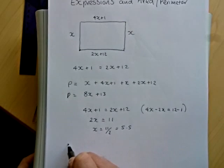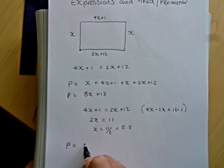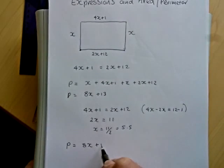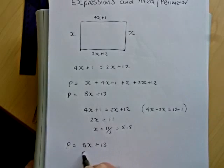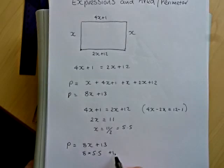Now the perimeter, so a bit more algebra here, the perimeter is 8 lots of x plus 13. So this then will be 8 times 5.5 plus 13.